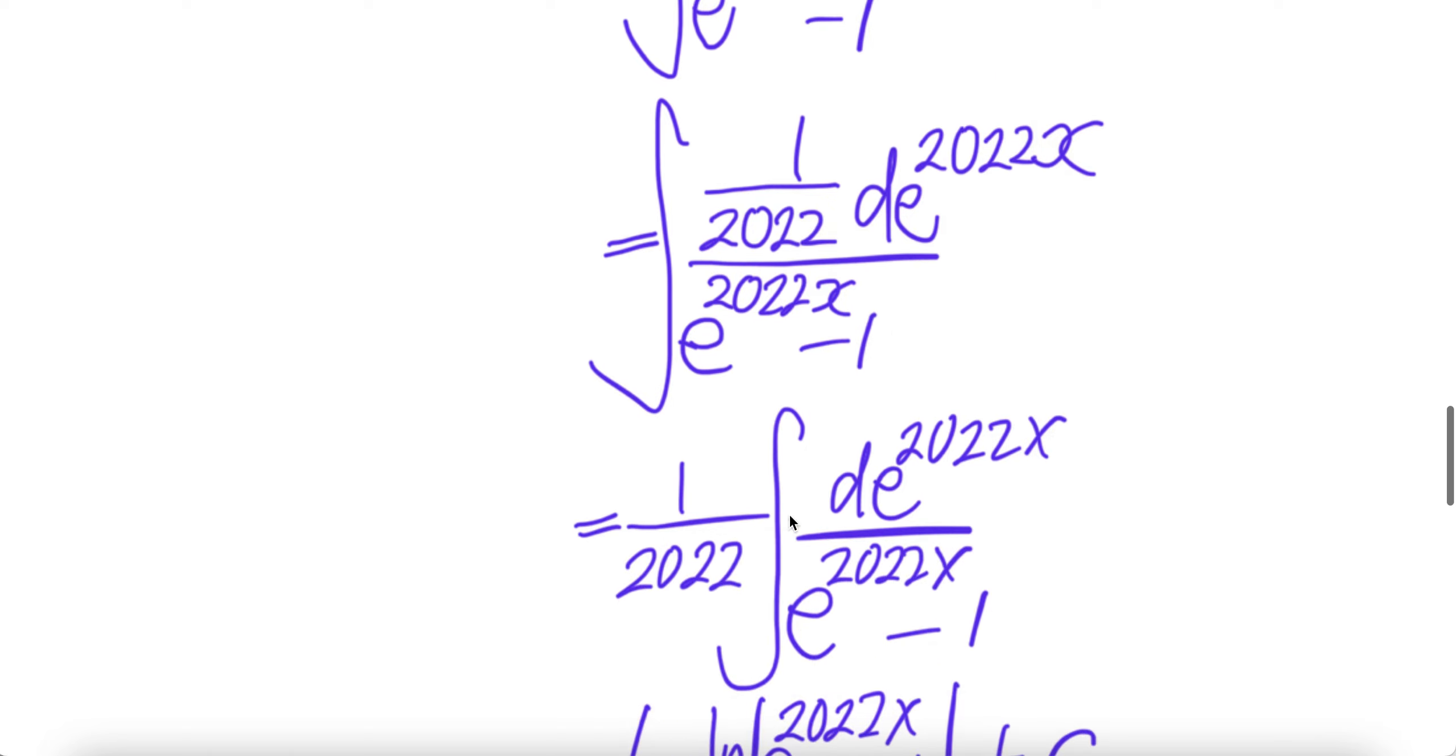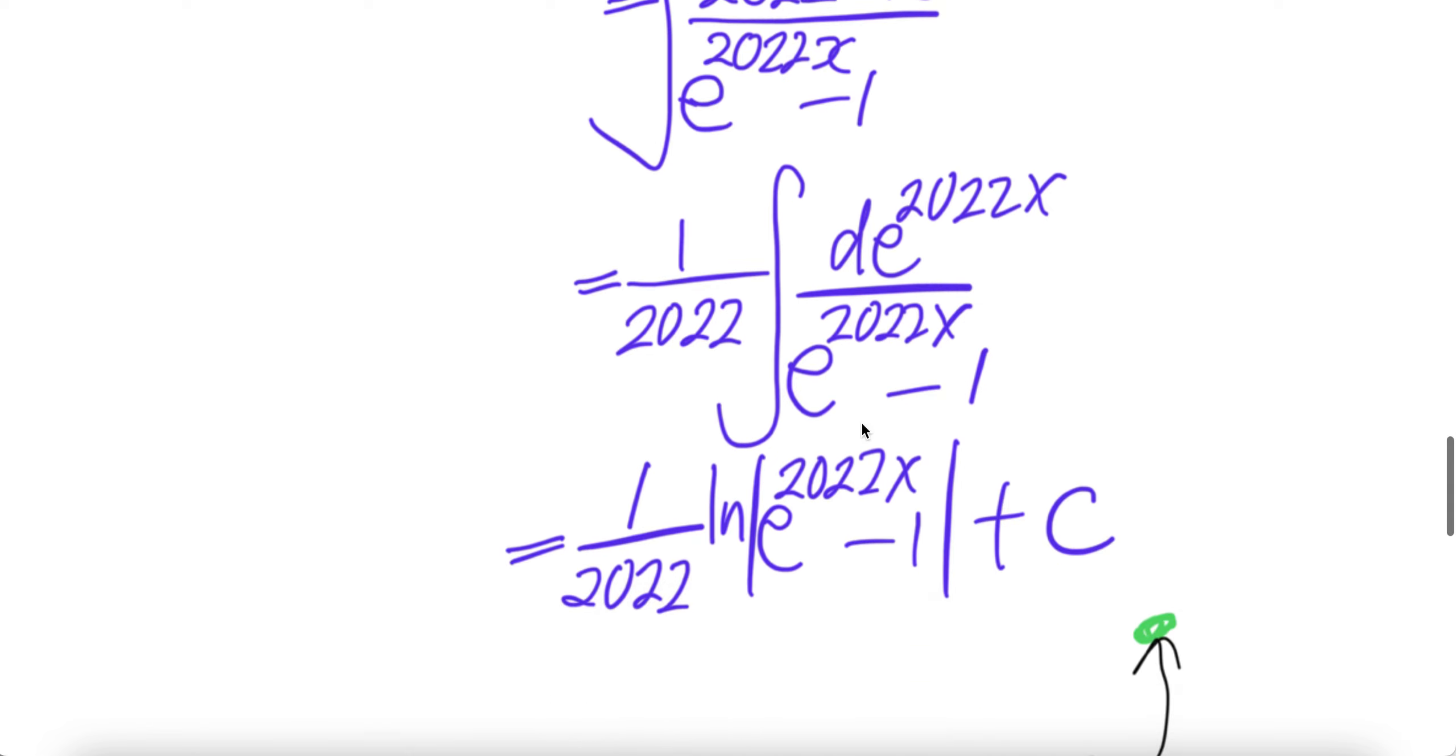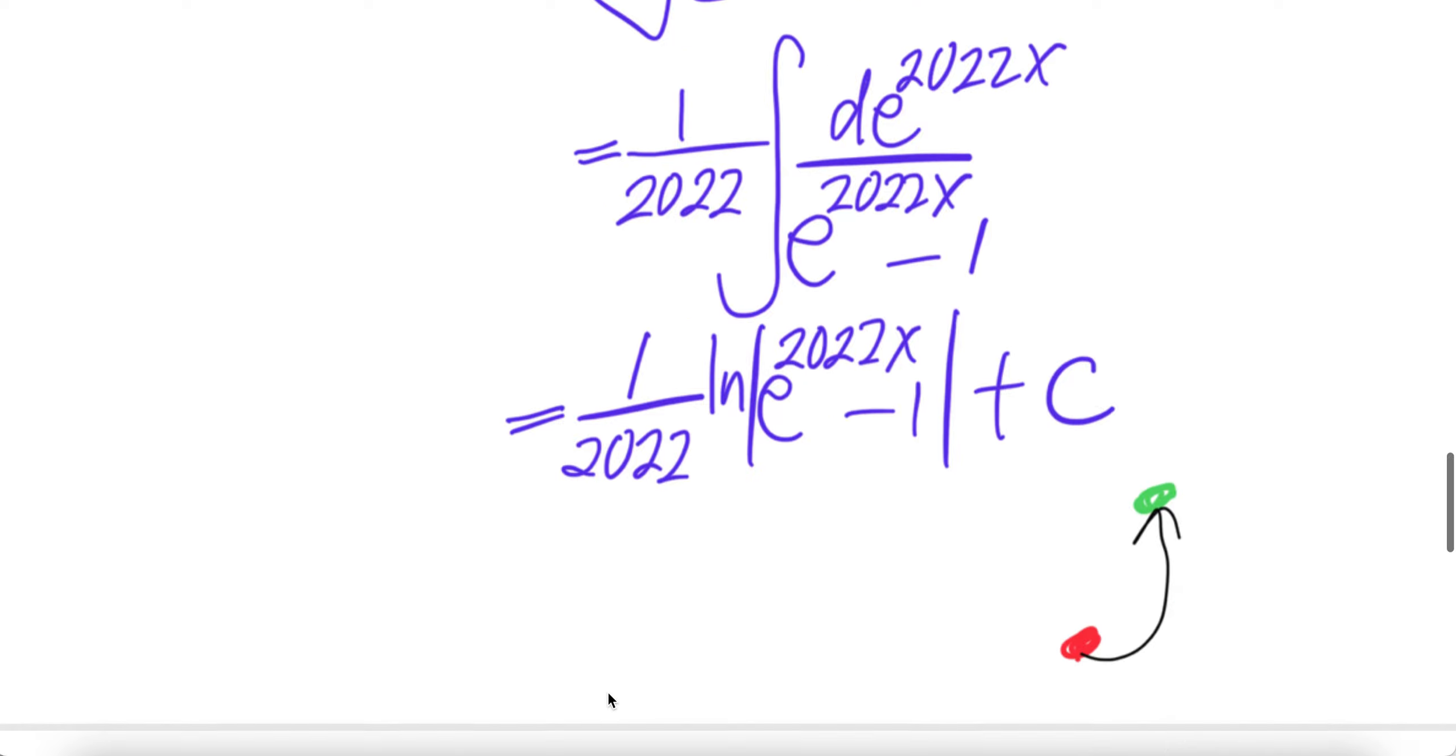Take the constant out and then your integral: d of e to power 2022x divided by e to power 2022x minus 1. The integral of that is ln absolute value of e to power 2022x minus 1 plus c. Don't forget the 1 over 2022.